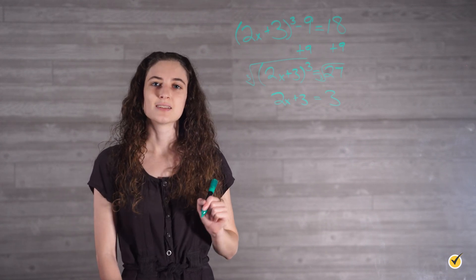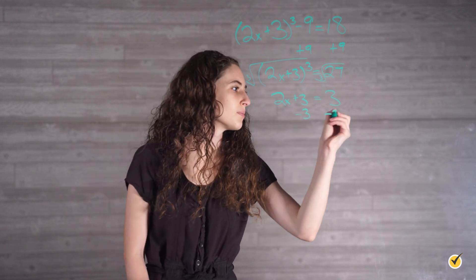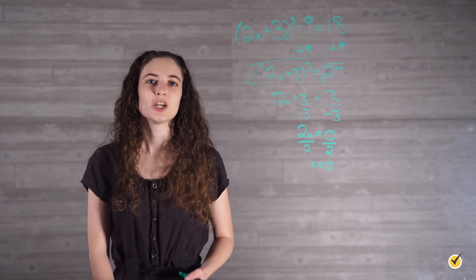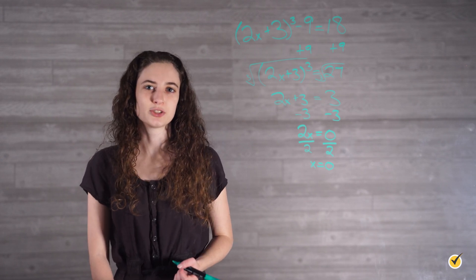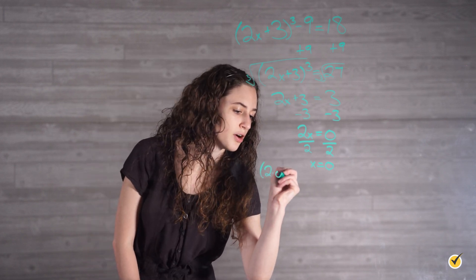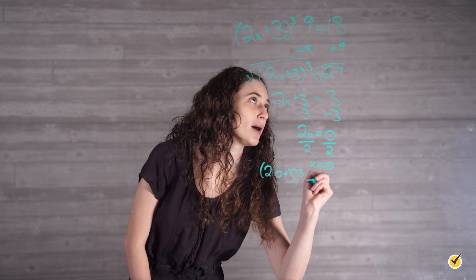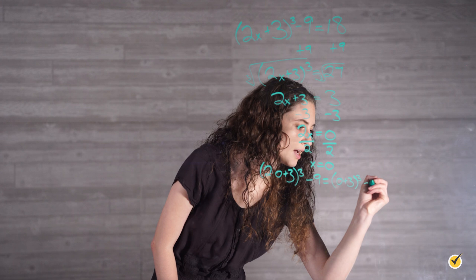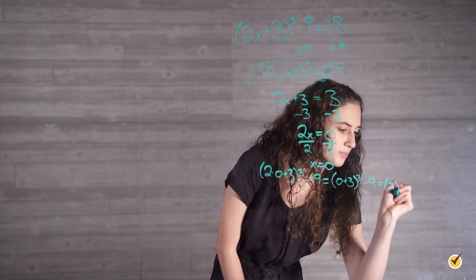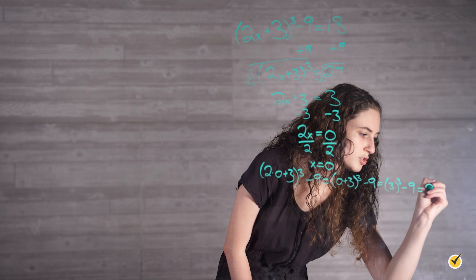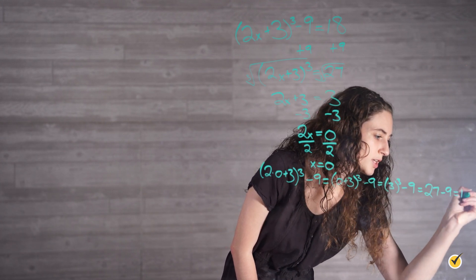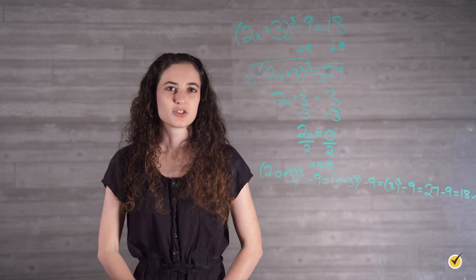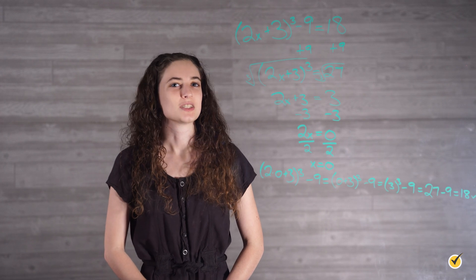Next, we're going to subtract 3 from both sides and then divide by 2. This gives us our final answer of x equals 0. We can check our answer by plugging it into the original equation: 2 times 0 plus 3, cubed, minus 9, is equal to 0 plus 3, cubed, minus 9, which equals 27 minus 9, which gives us 18 — our original answer. Plugging our answer back into the original equation gives us 18, which is what the original equation says we should get.